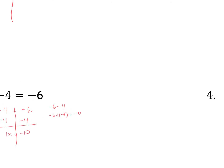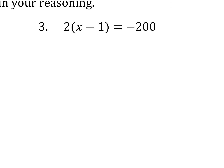Let's move on to number 3. This is a problem that can be solved two different ways, and I am going to show you both. You don't have to do it both ways — just focus on the way you prefer, just like we did in lesson 8. The first thing I notice is that I have 2 times (x minus 1) in parentheses equals negative 200. Before I do anything, I am going to rewrite this as addition. So that becomes 2 times (x plus negative 1) equals negative 200.